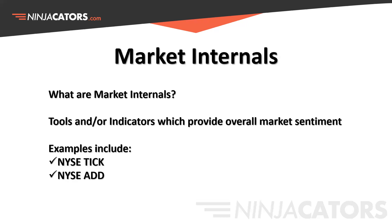There is a NASDAQ advance-decline line, a NASDAQ tick, an S&P advance-decline line, and all that. But at some point you've got to say, okay, I'm looking at enough stuff. If you look at too many things, you won't be able to make a decision because they're conflicting with each other. So you've got to narrow it down. In my opinion, the best way to do it is to go with the broad market.